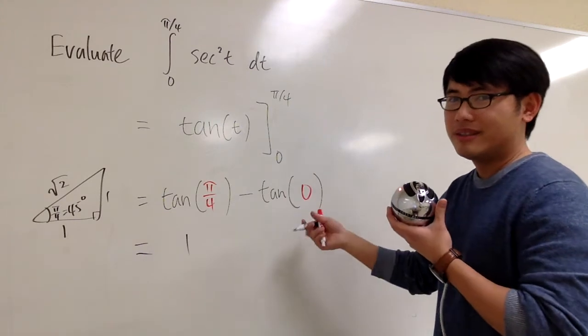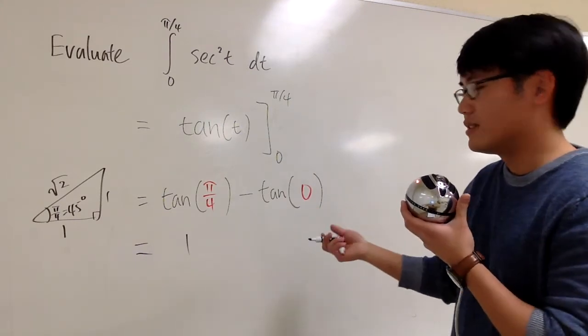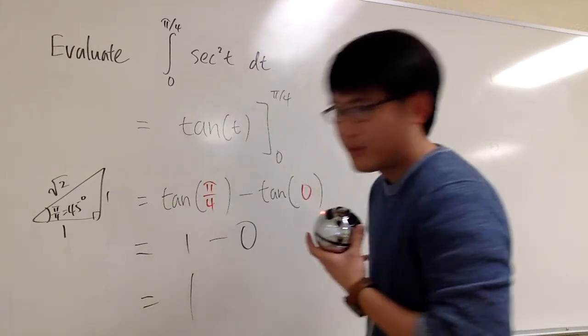Minus tangent of 0. This is sine over cosine, so sine 0 over cosine 0, which gives you 0. 1 minus 0 is of course 1.